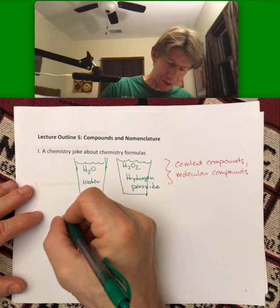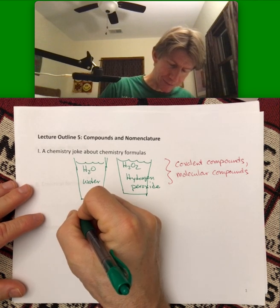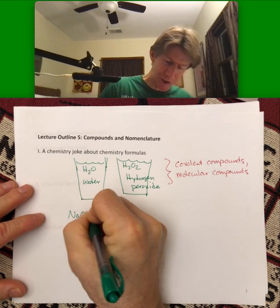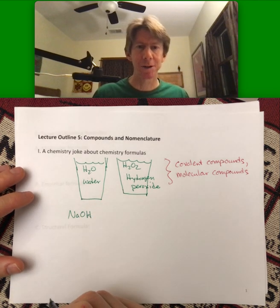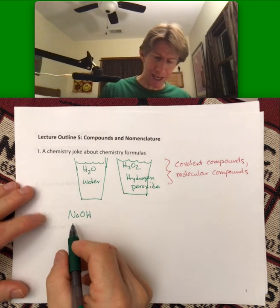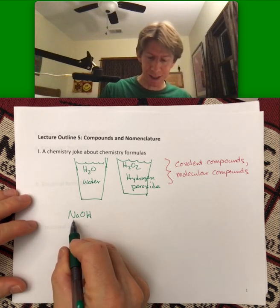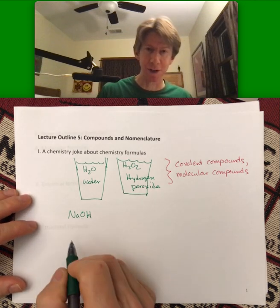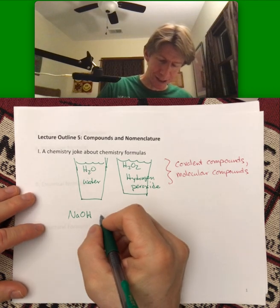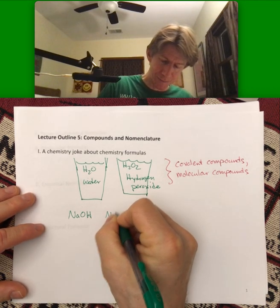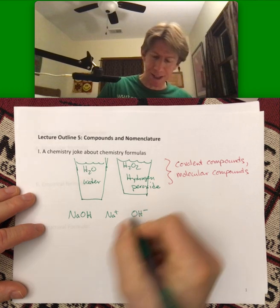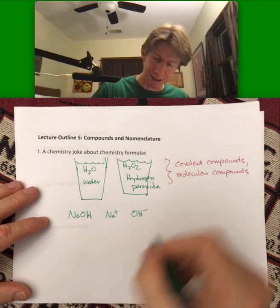Now if we were to look at something else, let's say NaOH. As we talked about in the last lecture outline, this is sodium hydroxide, and this has the Na+ ion in it and it is an ionic compound.